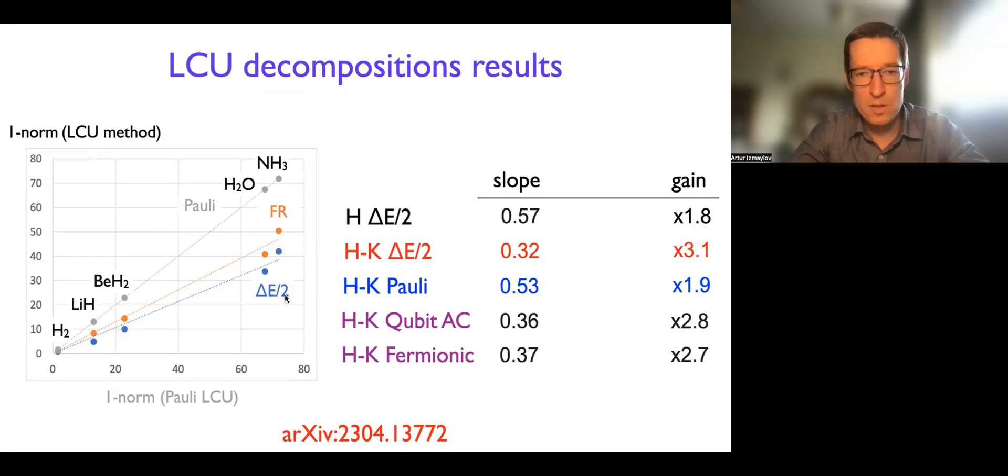And then all other LCUs should be lower than or have a smaller slope than the Pauli LCU. The lowest, of course, is just the delta E divided by two spectral range. Okay, so you cannot go lower than that. All the grouping techniques usually have some slope between the Pauli and delta E divided by two. Of course, if you change the Hamiltonian slope will be even lower, but still will be lower bounded by its delta E divided by two.